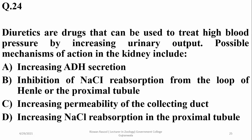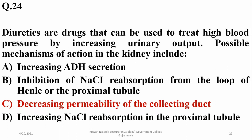Diuretics are drugs used to treat high blood pressure by increasing urinary output. Their mechanism in the kidney includes decreasing the permeability of the collecting duct — not increasing it. If the permeability of the collecting duct is decreased, less water is reabsorbed back into the blood, resulting in more urinary output. So the right option is Charlie: decreasing permeability of the collecting duct, decreasing reabsorption of water and promoting its loss.